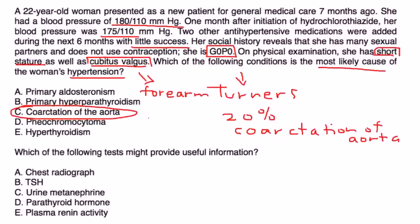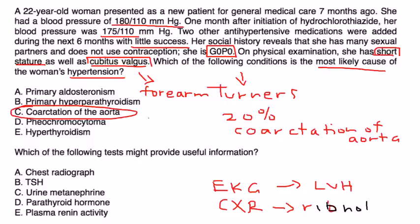Which of the following tests might prove useful? Well the very first test that I would probably do other than measuring her blood pressure which has already been done is either an EKG or a chest x-ray, very relatively simple tests. EKG will show left ventricular hypertrophy, chest x-ray will show that rib notching that we talked about, and that would be choice A.